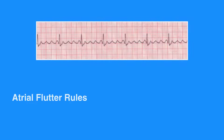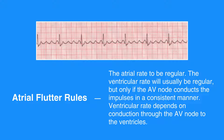The atrial flutter rules include the atrial rate to be regular. The ventricular rate will usually be regular, but only if the AV node conducts the impulses in a consistent manner; otherwise, the ventricular rate will be irregular. The atrial rate is normally between 250 to 350. Ventricular rate depends on conduction through the AV node to the ventricles. The P-waves will be well-defined and have a sawtooth pattern. Due to the unusual configuration of P-waves, the PR interval is not measured with atrial flutter. The QRS complex measures less than 0.12 seconds.